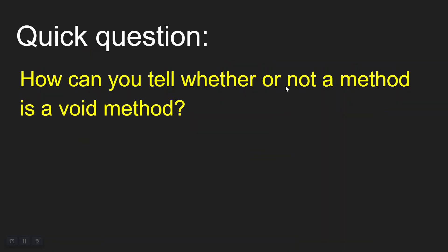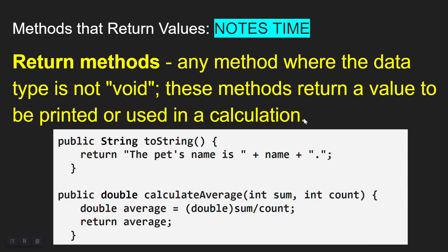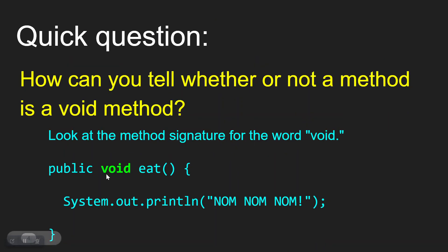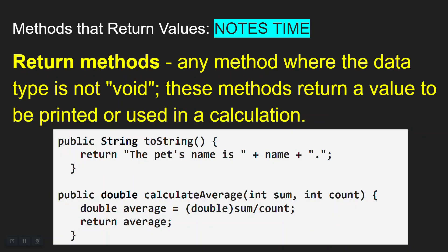How can you tell whether a method is a void method? Very easy — just look at the method signature. If you see the word 'void' in there, you know it's a void method, and you'd expect it to simply print something or do a calculation. 'main' is also a void method — 'public static void main' — so that's interesting to know.